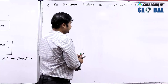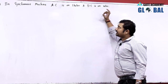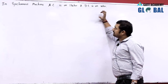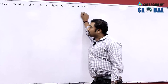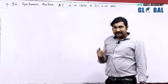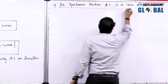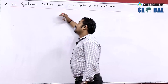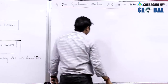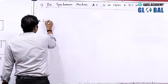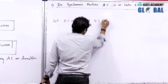In synchronous machines, AC is on the stator and DC is on the rotor. This is very important. Most of the time students think they know that AC is on the stator and DC is on the rotor. But what happens if we place AC on the rotor and DC on the stator? Let us observe this to understand why the armature is on the stator and the field is on the rotor.